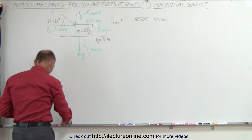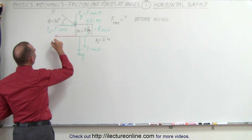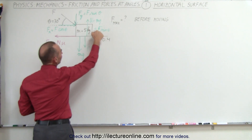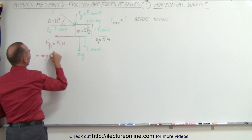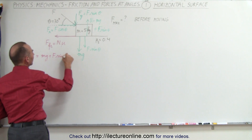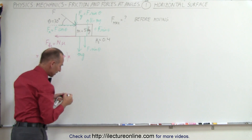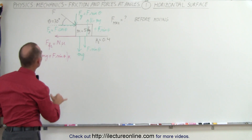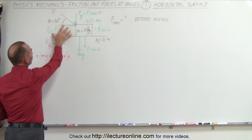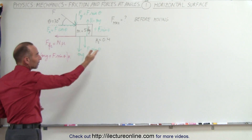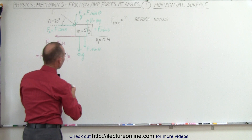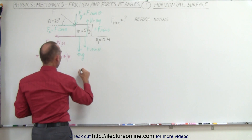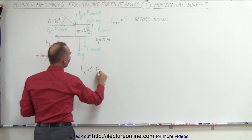The friction force — let me use a different color — is the force pushing back, and it equals the normal force times mu. In this case, the normal force is the sum of these two forces, so the friction force equals mg plus the applied force times sine of theta, all multiplied by mu. The block will not move until the force in the x direction exceeds the friction force; at that point the block will begin to move. So as long as the force is equal to or less than the friction force, the block will not move.